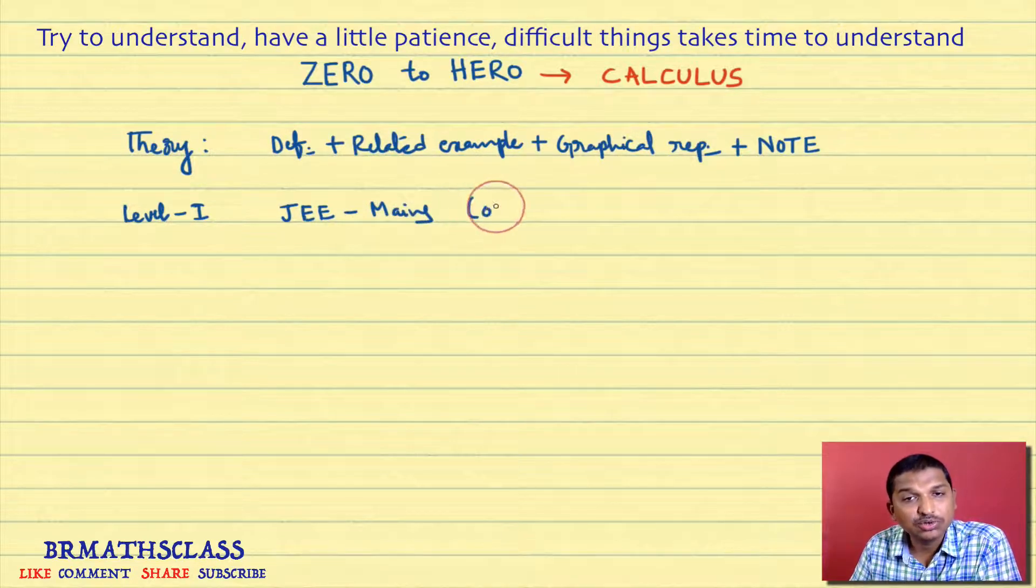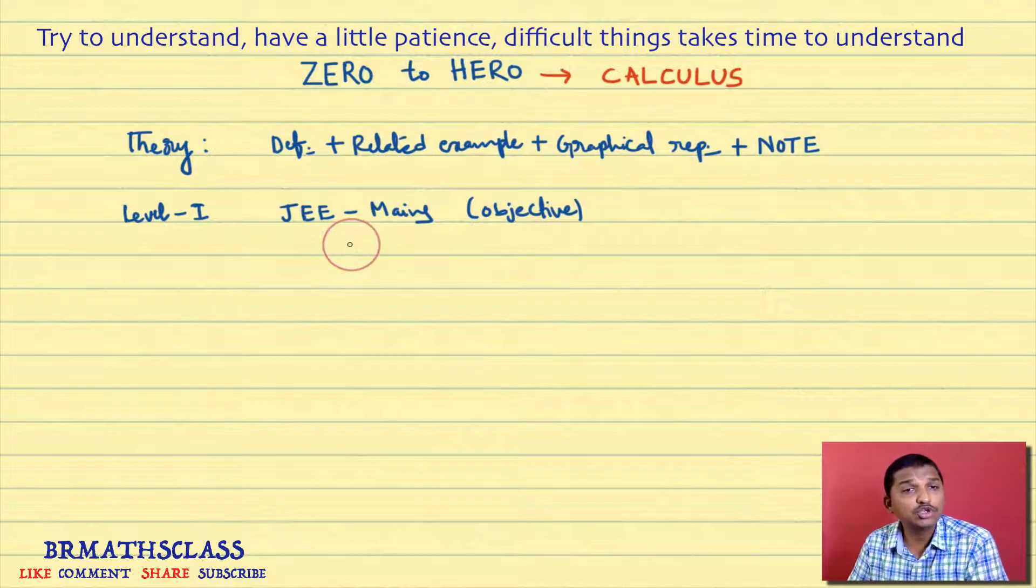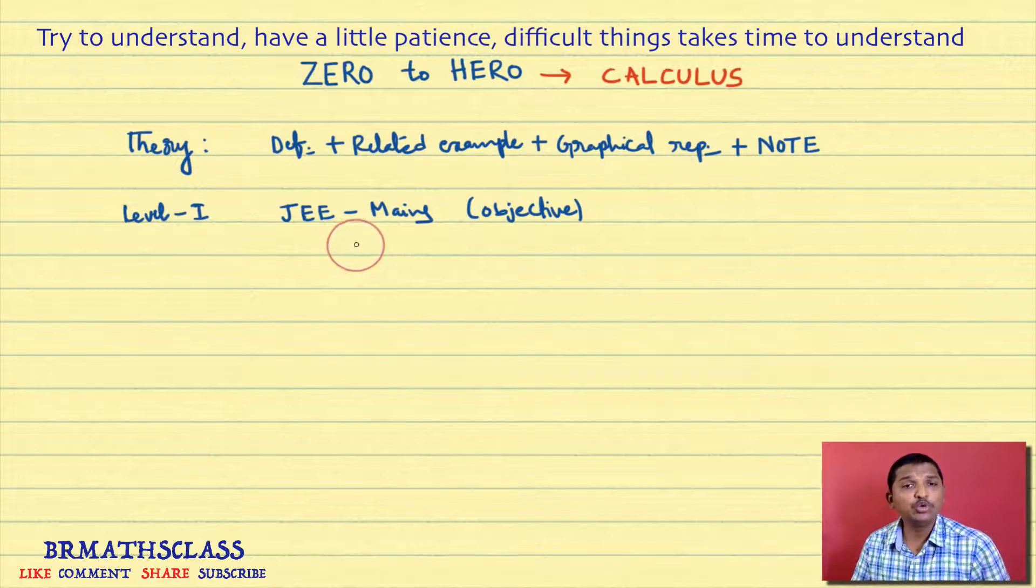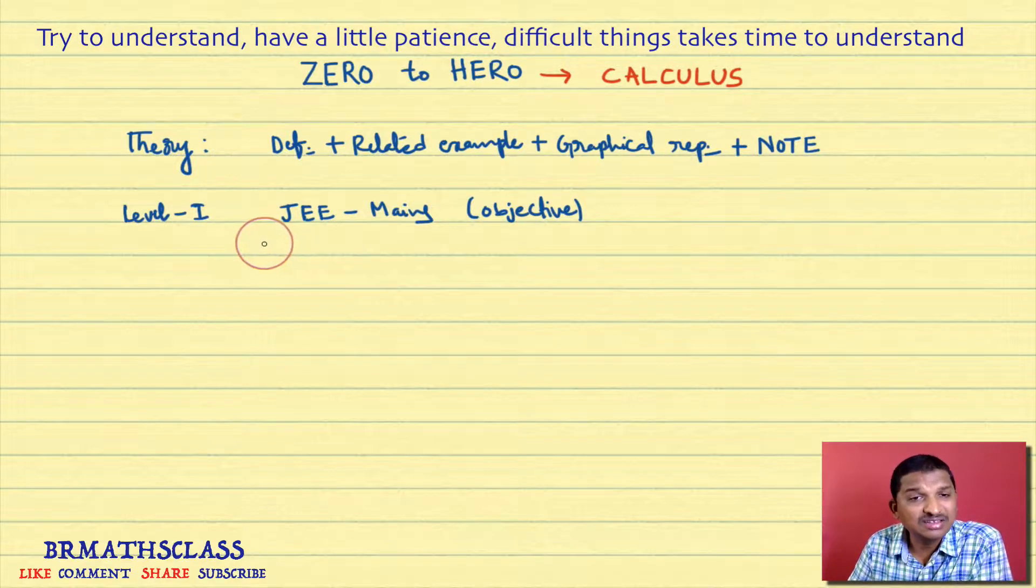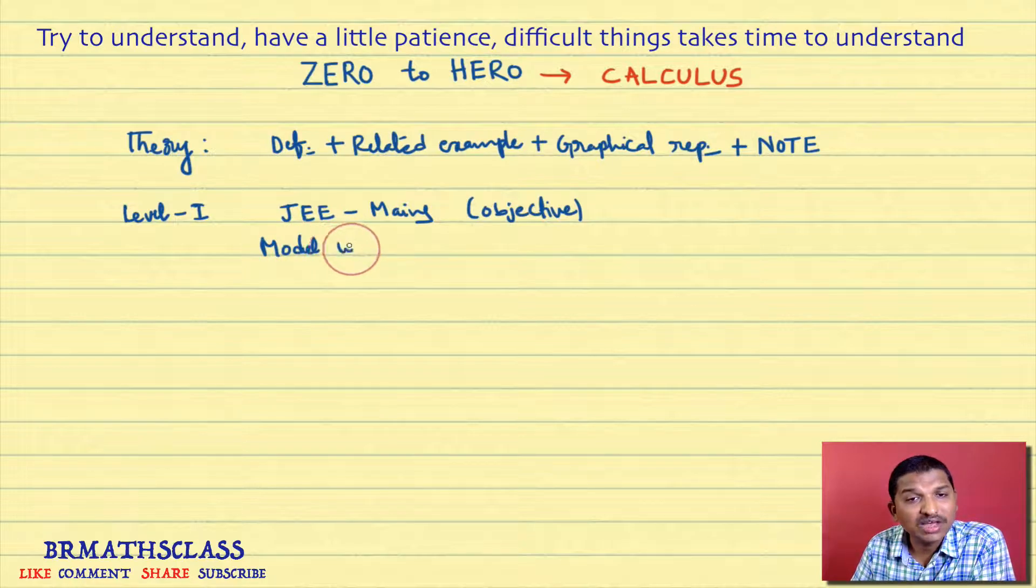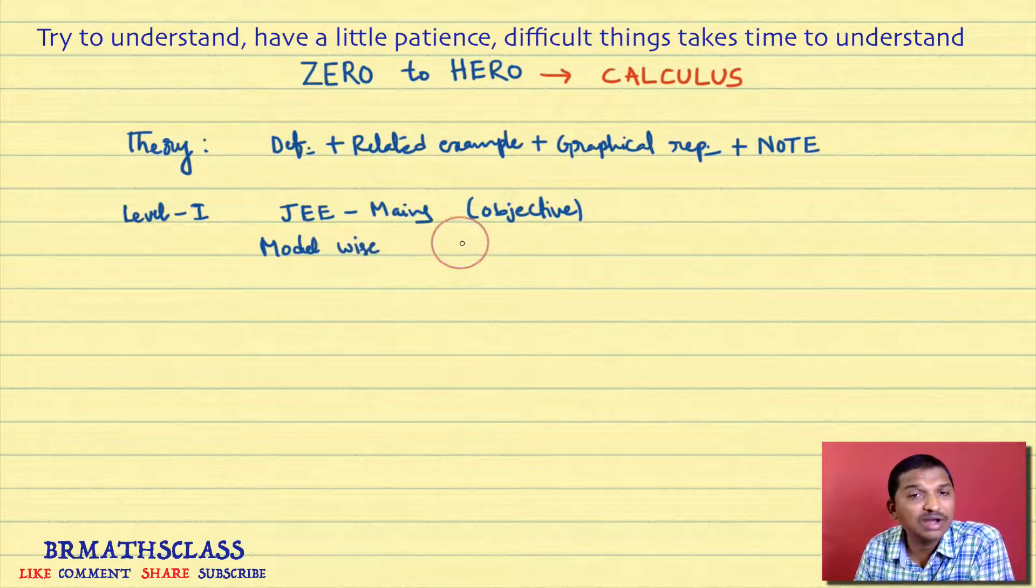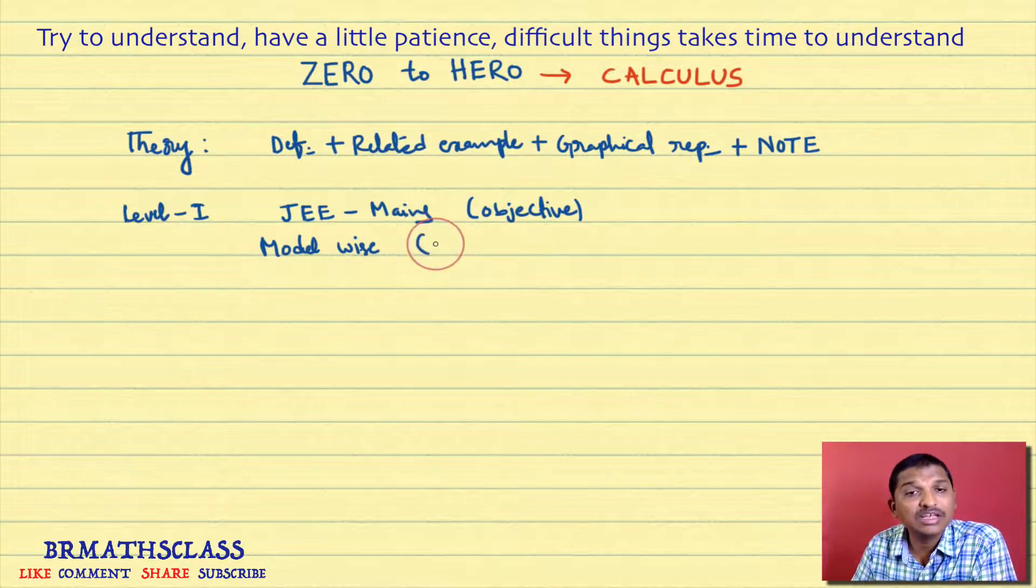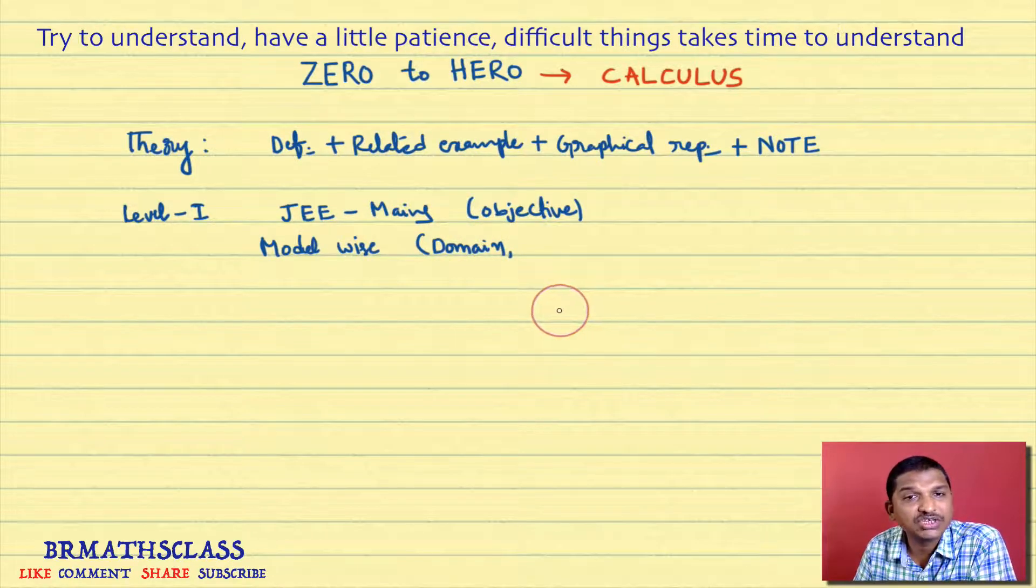I am not going to discuss descriptive problems here, completely objective problems. These objective problems I am going to do model wise. This is important. First we do the problems model wise. At the end of this level one, we do miscellaneous problems. For example, in functions chapter, there are so many problems related to domain. Find the domain of the function.